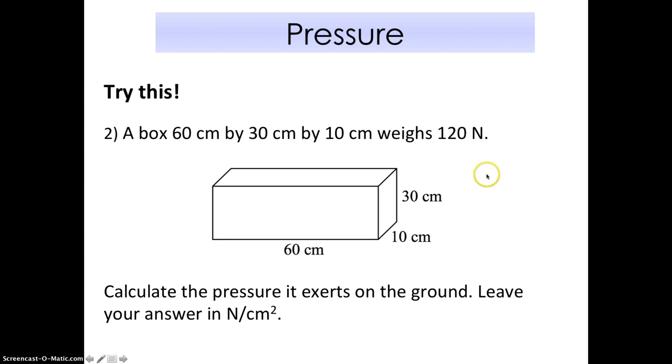Let's try one more question. Now I have a bit more numbers, I want you to find out which number you need to use. Calculate the pressure again for this box that exerts on the ground. A box 60 cm by 30 cm by 10 cm weighs 120 N. Take note, you need to leave your answer as newton per cm square. It is not Pascal anymore. Because it's newton per cm square, you don't need to convert this cm into meters anymore, you can just leave it in cm. Remember pressure equals force divided by area. You take this force divided by the area touching the ground. The area touching the ground, you need to take this length multiplied by this length. You cannot take this one because this doesn't face the ground.